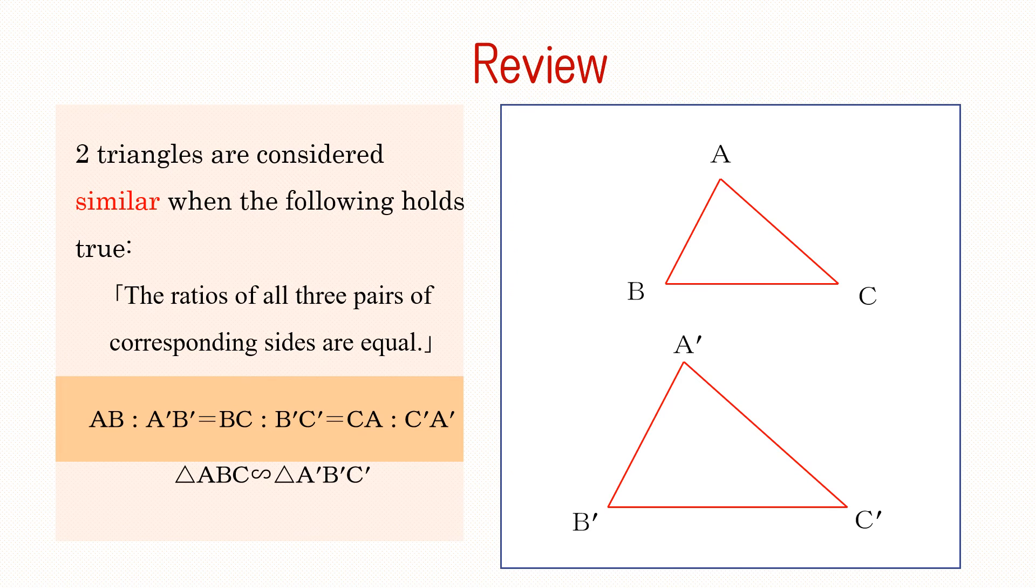For the following two triangles, if the conditions AB to A'B' equal BC to B'C' which is equal to CA to C'A' are satisfied, we can see that the two triangles are similar.